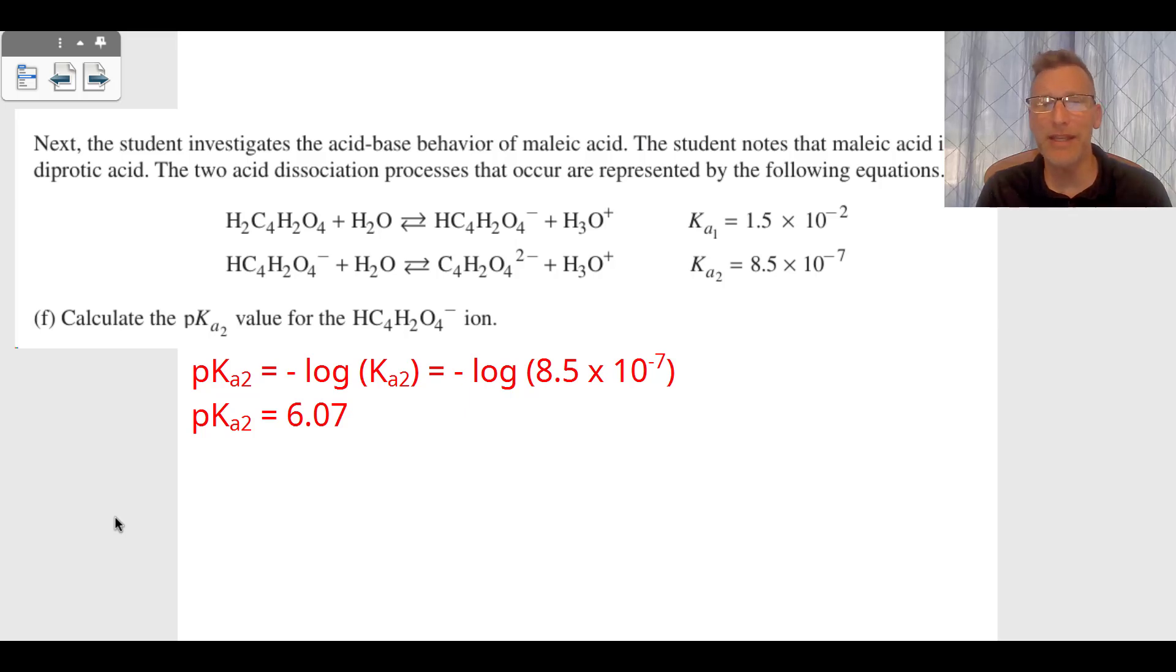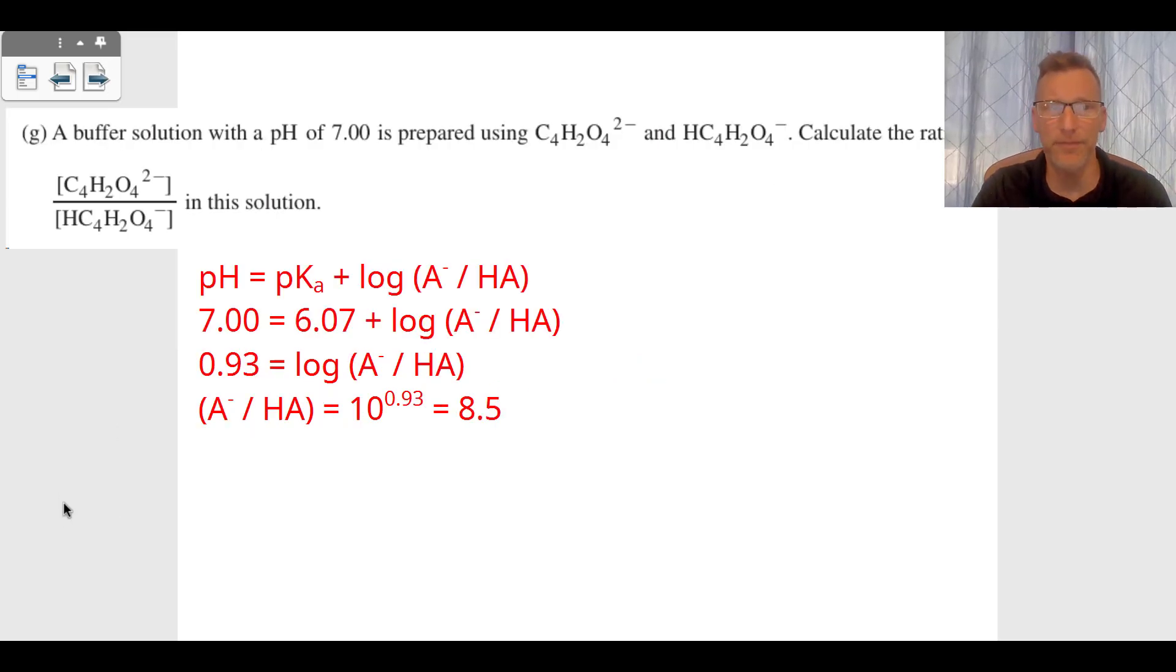Then they're looking for a buffer solution with a pH of 7, and we want to use the Henderson-Hasselbalch equation: pH = pKa + log(A⁻/HA). We know the pH is 7.00, our pKa2 was 6.07. We subtract that, which gives us 0.93. We do the opposite of log, which is 10 to the 0.93, and that gives us an A⁻ to HA conjugate base to weak acid ratio of 8.5.